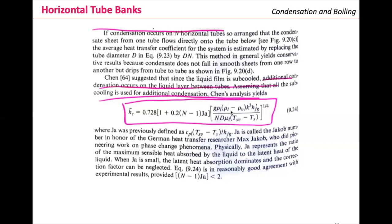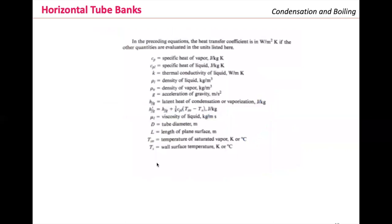To check all the variables — rho_L, rho_V, H_fg, T_s, T_sat — your textbook at the end of the chapter provides a nomenclature section. It lists all the variables, their definitions, and units used throughout the chapter, including C_p, C_pL, rho_L, rho_V, G, and H_fg.